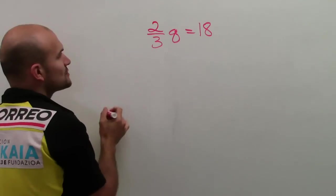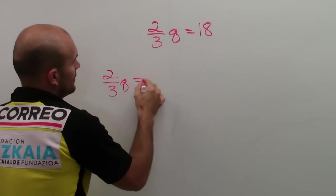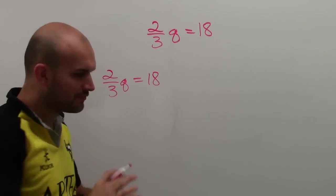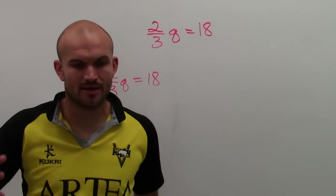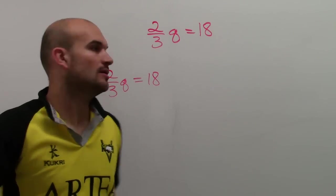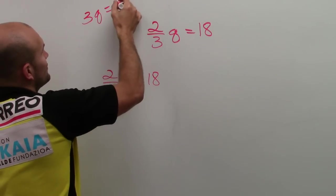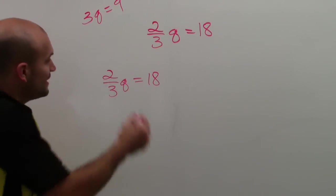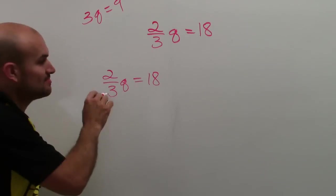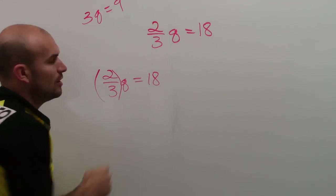So there's two ways I want you to look at this. Here I have 2/3 q equals 18. If we just go back through our inverse operations, we need to look at this and say what is happening to my variable? Well, it's just like 3q equals 9. My variable's being multiplied by a number, here it's the same thing, it just means it's being multiplied by a fraction.